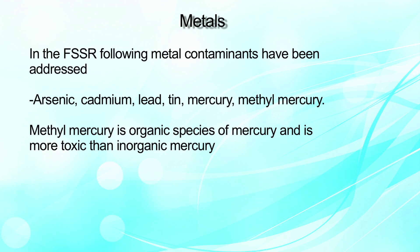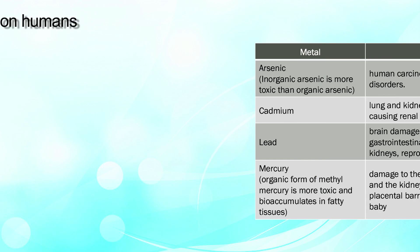Methylmercury is the organic species of mercury and is more toxic than inorganic mercury. Let us also have a look at the toxic effects on human beings. Arsenic can cause cancer, skin diseases, and vascular and nervous system disorders. Lead can cause brain damage, paralysis, anemia, gastrointestinal problems, and can cause damage to the kidneys, reproductive, as well as the immune systems.